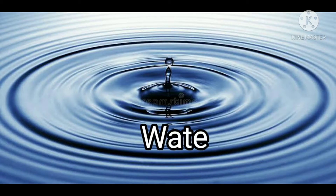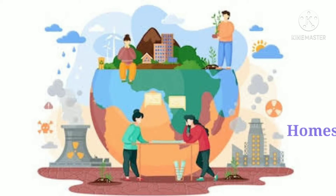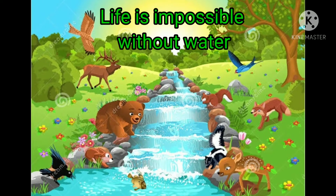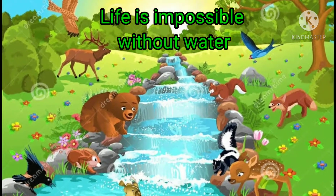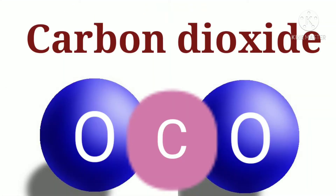Sb se pehle hai water. Water jo hai, ek commonly use hone wala compound hai jo gharon mein use hota hai, industries mein use hota hai, agriculture mein bhi use hota hai. Without water humari life bilkul impossible hai. Aur ye ek compound hai.